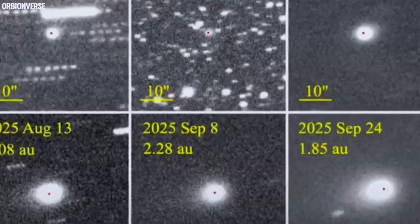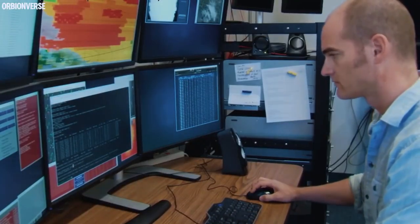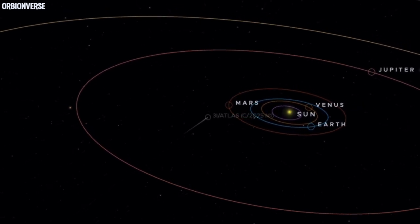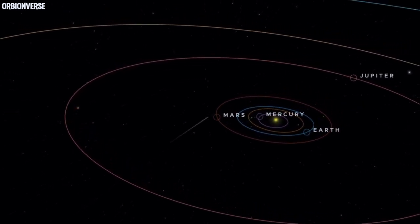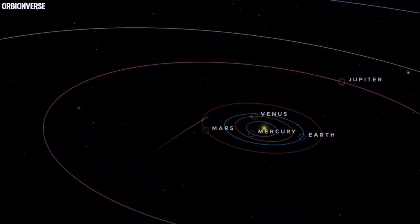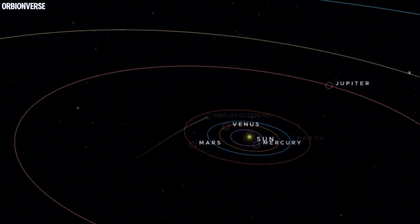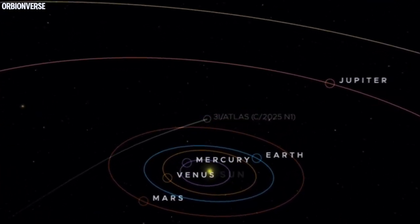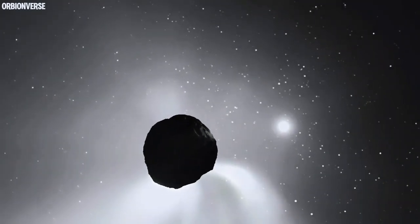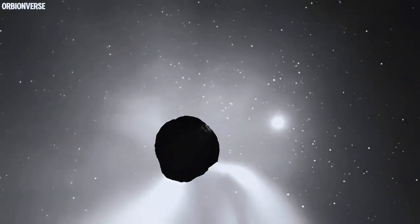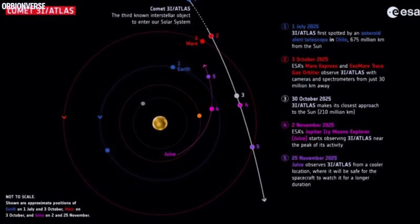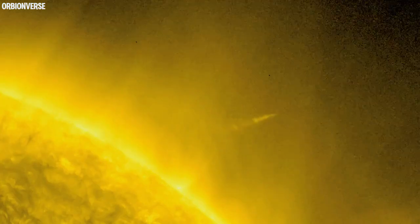Scientists began tracking it more closely. Its trajectory, once thought to be a quick flyby, was now bending subtly but steadily toward the sun. But 3I Atlas isn't like our local comets—it came from beyond the solar system, perhaps even from another star's domain. So why was it now being drawn closer, as if the sun had suddenly gained a strange new power over it?